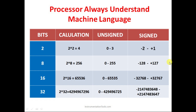For signed integers with 8 bits, the 256 values are divided in half. From minus 128 to 0 that is 128 negative values, and from 0 to 127 that is 128 positive values including zero — giving a total of 256 values. So for signed integers using 8 bits, the range is minus 128 to plus 127.